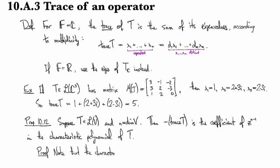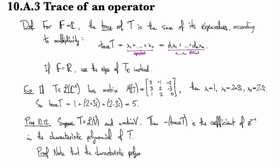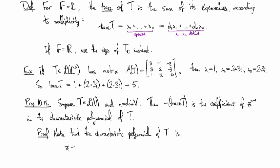This comes by looking at how you multiply binomials out. The characteristic polynomial factors as (z - λ₁)(z - λ₂)···, where each factor is repeated with multiplicity. Each term in the expansion comes by picking exactly one thing from each pair of parentheses. The highest-order term comes when you choose z from every factor, giving z^n.